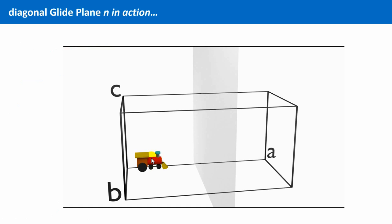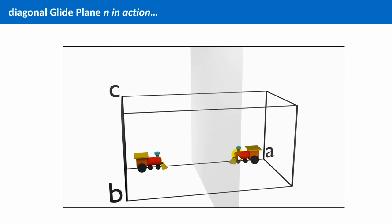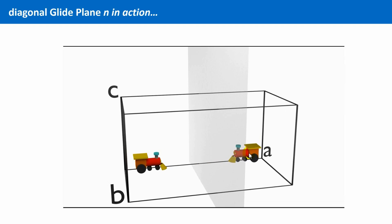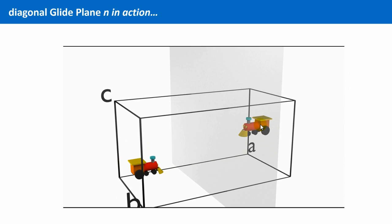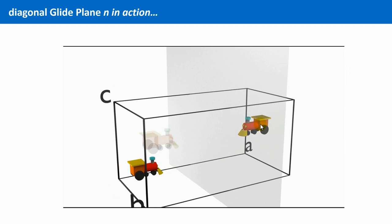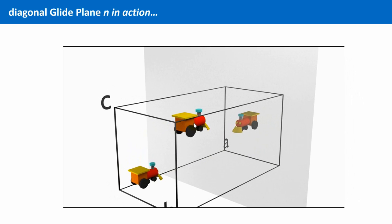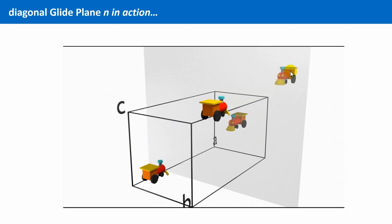In 3D this kind of glide plane looks like this. Mirroring at the b-c plane, translation parallel along the b-c diagonal, mirroring again, further translation in the diagonal direction and so on.